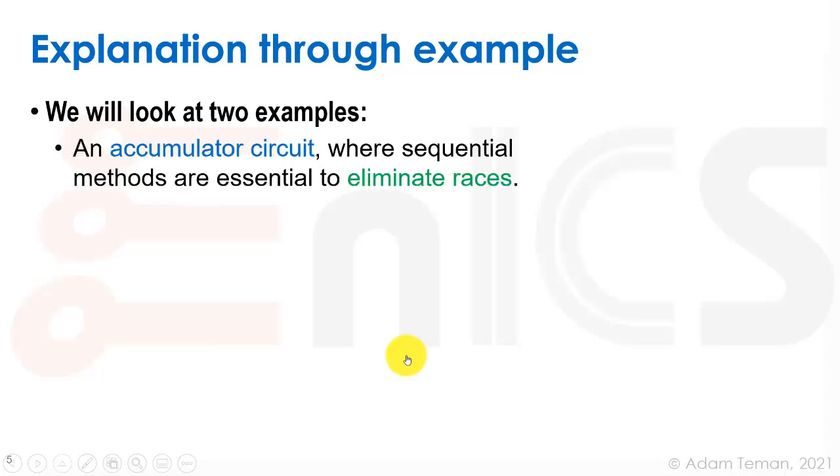The first thing is an accumulator circuit where sequential methods are essential to eliminate races. If we don't use sequential logic we will probably have races and we won't be able to do any calculations. That is the main reason for using sequential methods. And that's why almost all of our designs, our digital designs at least today, are synchronous.